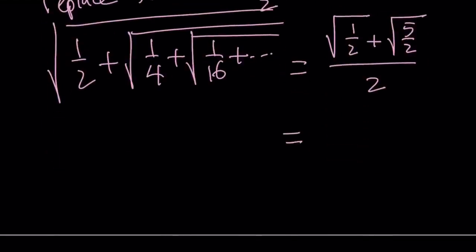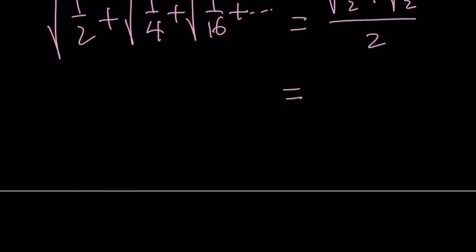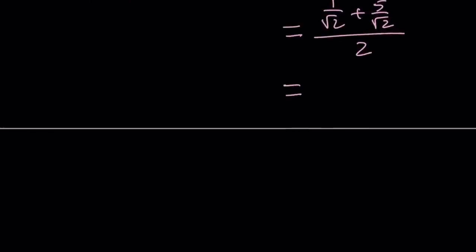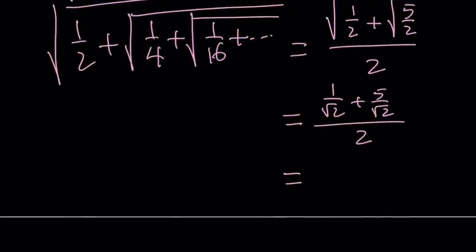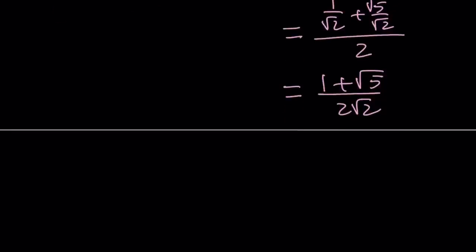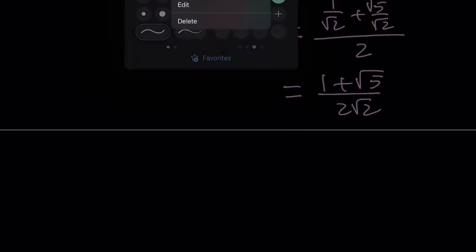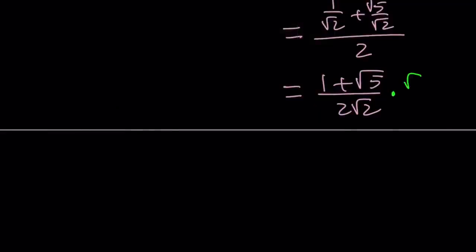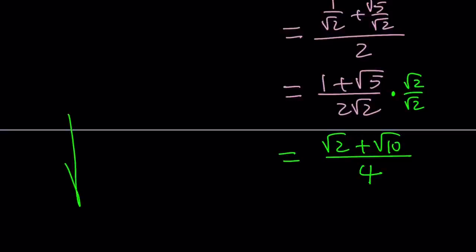Let's simplify the right-hand side. We can write it as 1 over the square root of 2 plus the square root of 5 over the square root of 2, all divided by 2. Bringing the square root of 2 downstairs, it becomes 1 plus root 5 divided by 2 times the square root of 2. Multiplying by the conjugate gives us square root of 2 times square root of 2 on the denominator, yielding the square root of 2 plus the square root of 10, divided by 4. So that is the value our expression converges to.